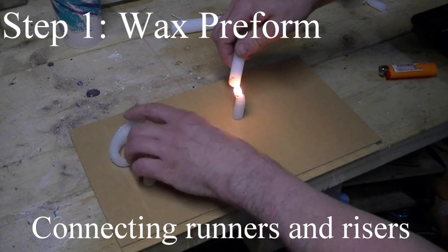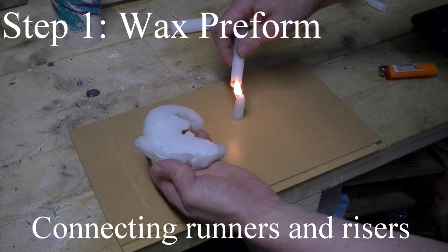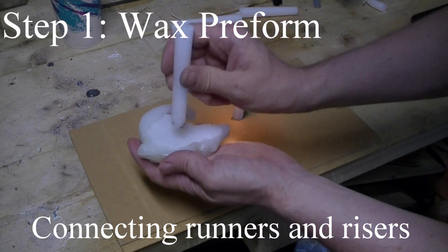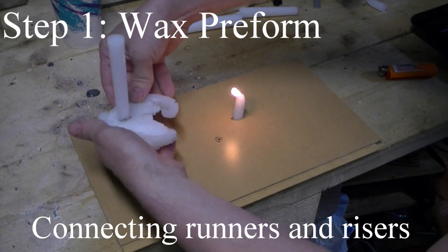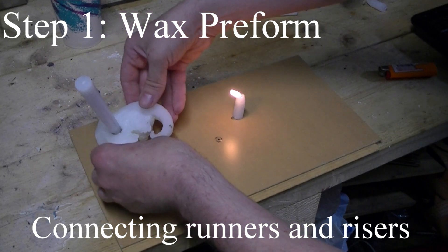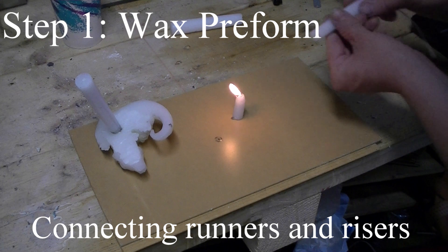So here we are at the first phase. We have our wax preform of our dragon. We're using some candlesticks, this is paraffin wax, and we're going to connect these to our dragon to form our riser and runner so we have somewhere to pour the molten metal in.